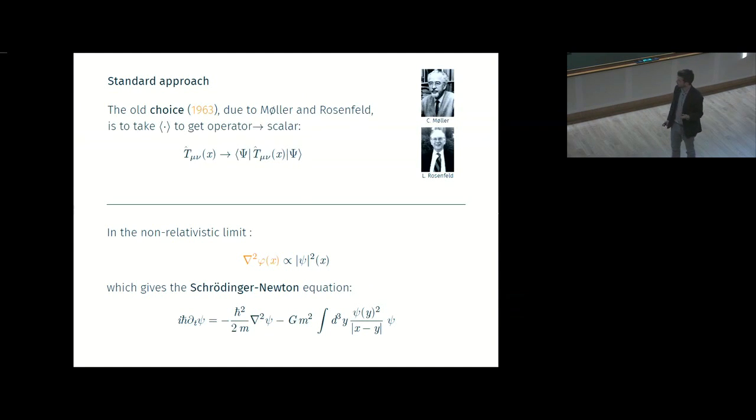This in the non-relativistic limit for a one-particle wave function essentially means that you source the gravitational field with psi squared. And this gives the Schrödinger-Newton equation, which is a non-linear extension of the Schrödinger equation.